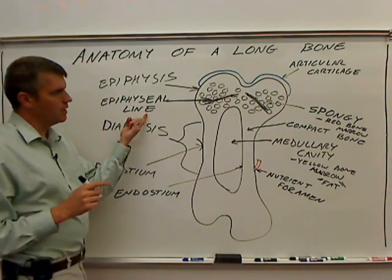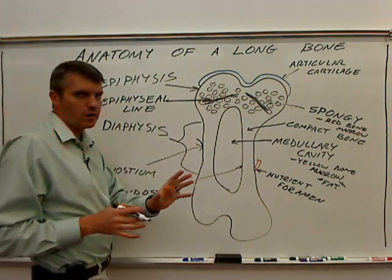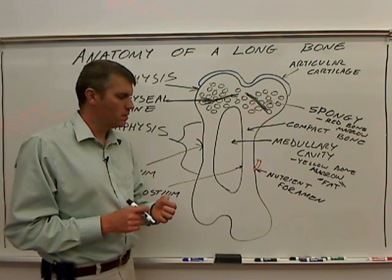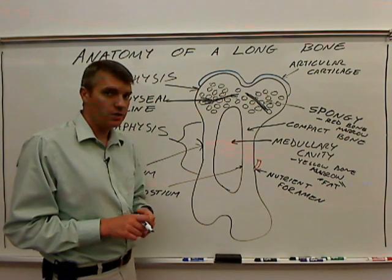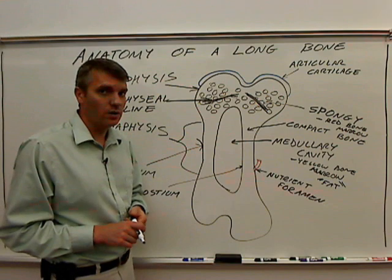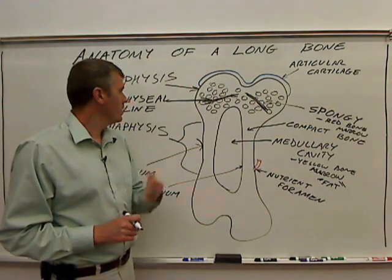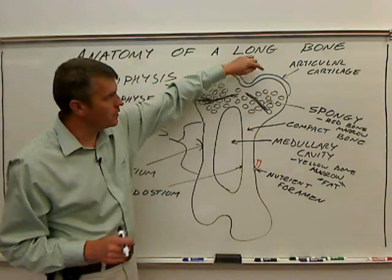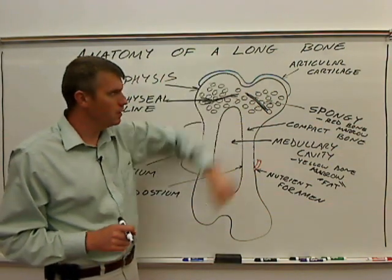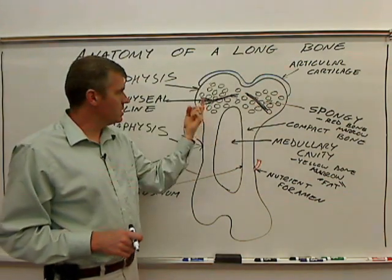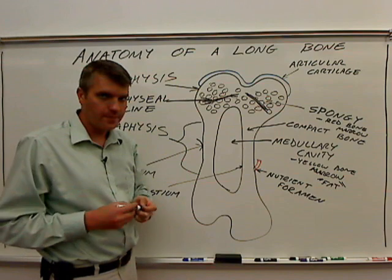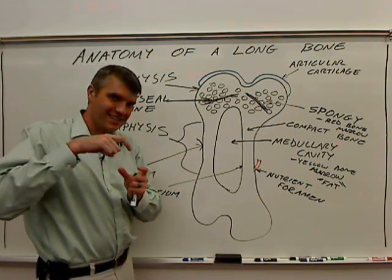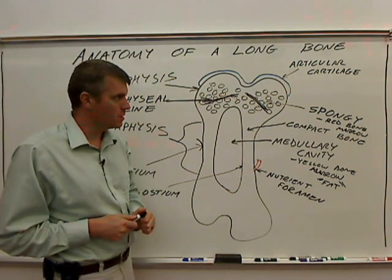Just as a reminder, the epiphyseal line you could also call a growth plate. The type of cartilage there is hyaline cartilage, but it looks a bit different from the articular cartilage at the ends of the bone, which is also hyaline cartilage. The reason is that in the epiphyseal plate, because the bone is growing, those chondrocytes are multiplying and making stacks of cells — so it looks different at the growth plate.